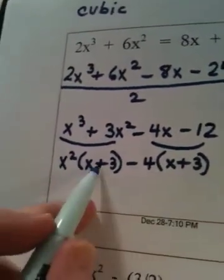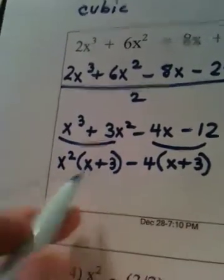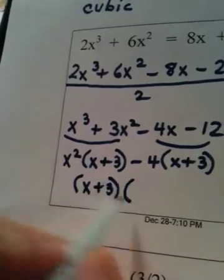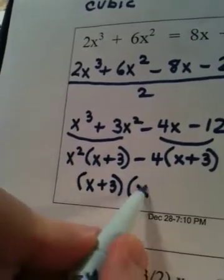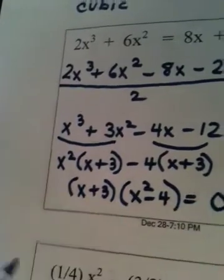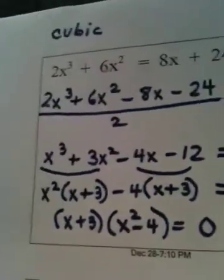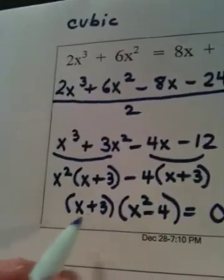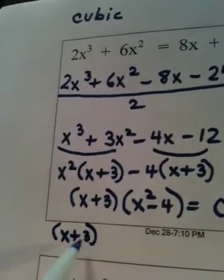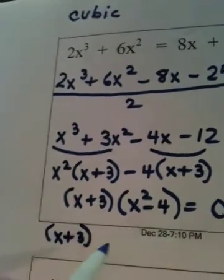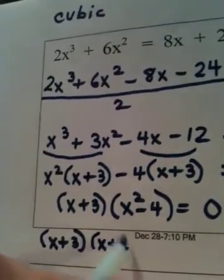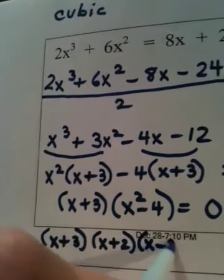As I continue factoring, I pull out my GCF of x plus 3, and my other factor would then be x squared minus 4. And as I've taught you in class, the rule is factor till you drop. So, x plus 3 is done as far as factoring. x squared minus 4 is the difference of two squares. So, we have an x plus 2, and we have an x minus 2.